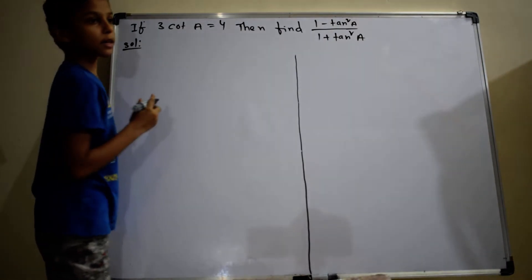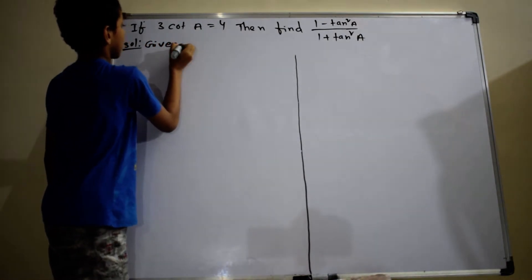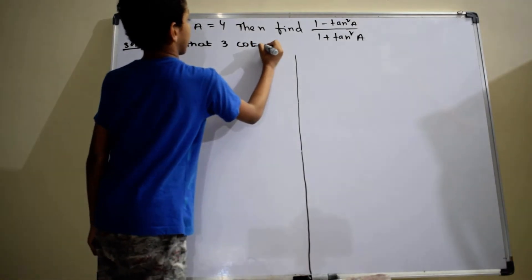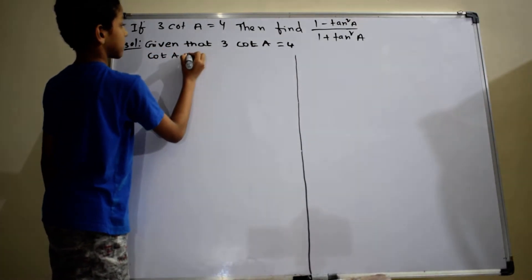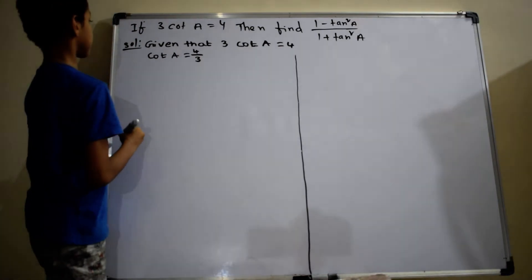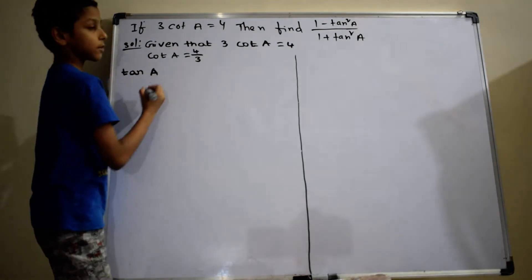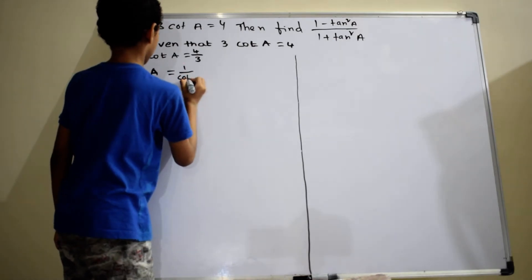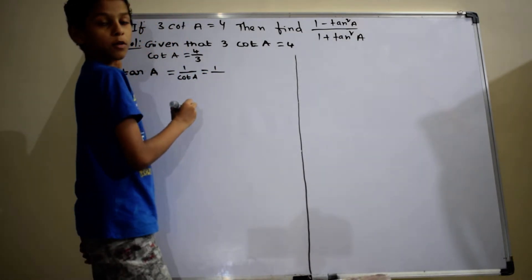Solution. Given that 3 cot A equals 4, so cot A equals 4 by 3. tan A equals the reciprocal of cot A, which equals 1 by cot A. So 1 by cot A equals 1 by (4 by 3).